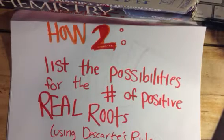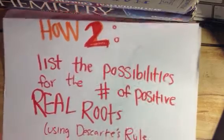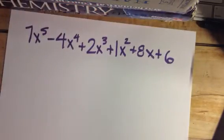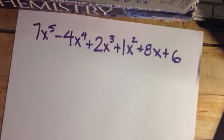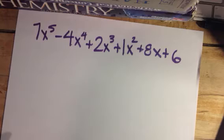This is how to list the possibilities for the number of positive real roots. This is probably the easiest of the tutorials I've done so far because it's really simple to determine. All you have to do is count the number of sign changes.